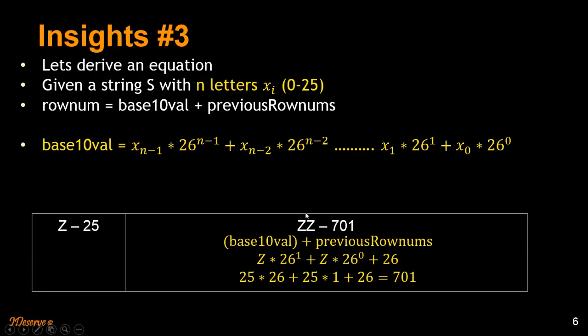So xn minus 1 into 26 power n minus 1 plus xn minus 2 into 26 power n minus 2, till x0 into 26 power 0. So in this case, for ZZ, you have n equal to 2.